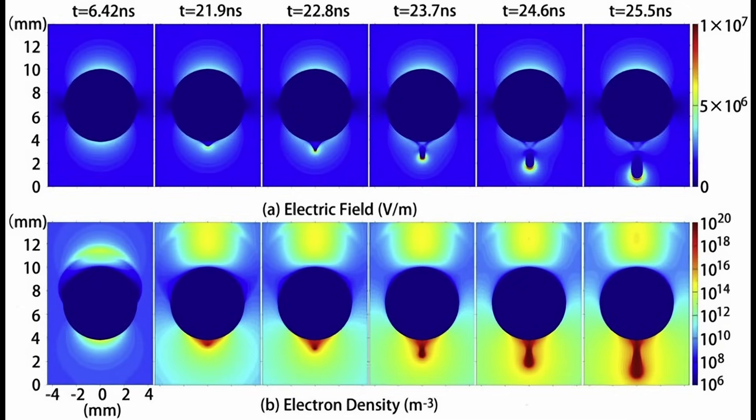While the field required for the initiation of an electric discharge near the hydrometeor's surface is less than that needed for the streamer formation, it is conceivable that the field near the hydrometeor may discharge before the streamer can form.